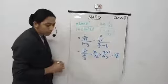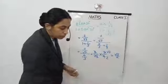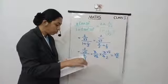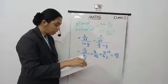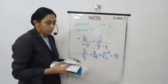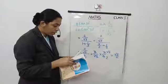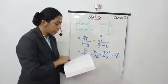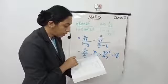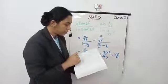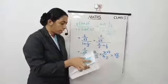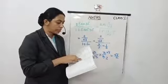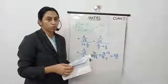Now check in the table which angle gives root 3 by 2. Root 3 by 2 is cos 30° and sin 60°. Now check the given options: sin 60°, cos 60°, tan 60°, sin 30°. So the correct answer is sin 60°, which equals root 3 by 2.